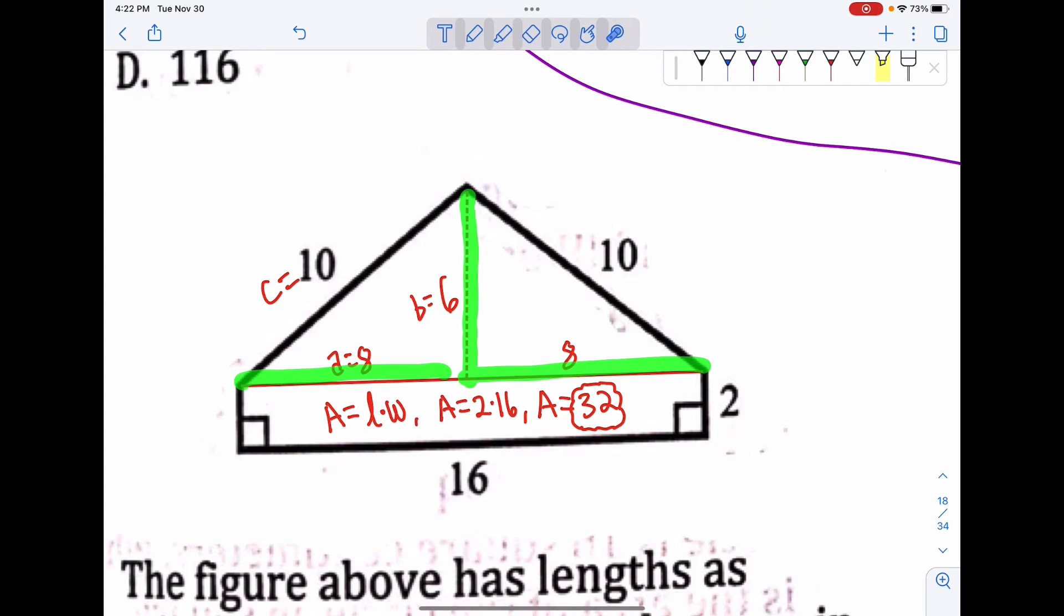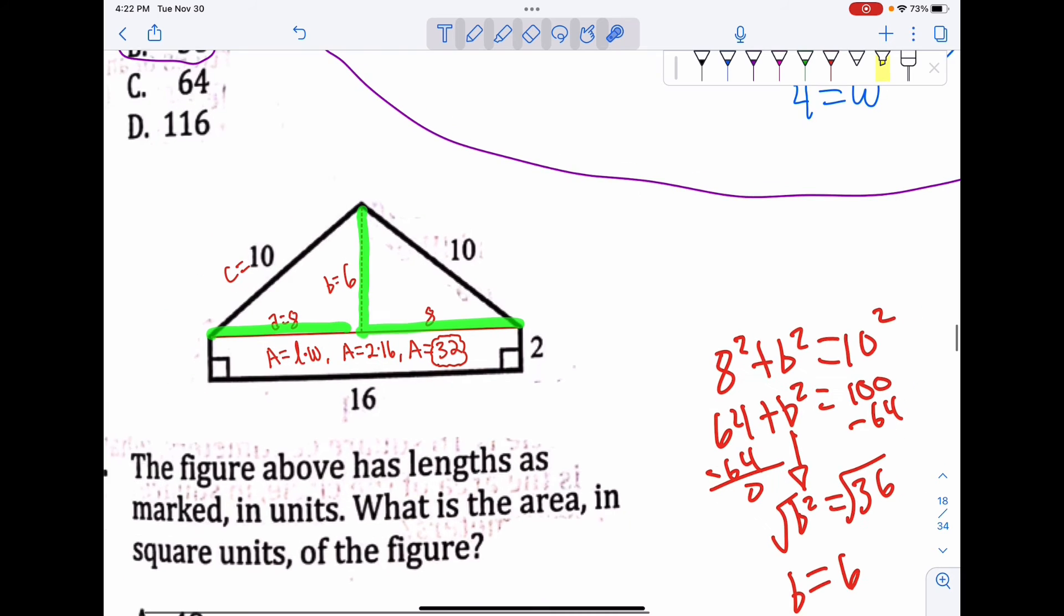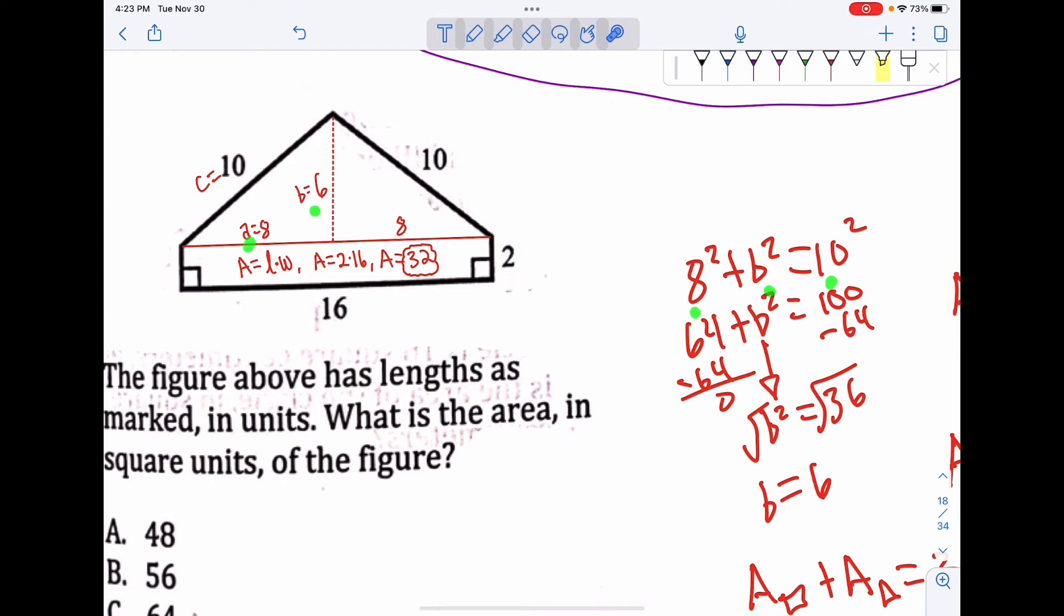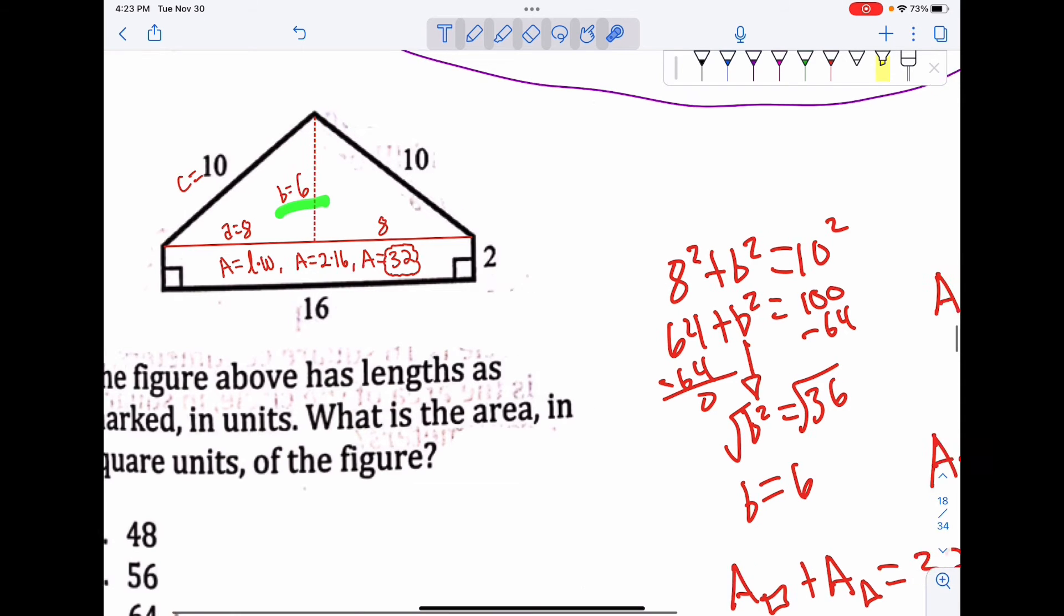Now we don't know what this height is, so we have to figure it out using the Pythagorean theorem. a² + b² = c². a times 8 is 64, 10 times 10 is 100. 100 minus 64 is 36. b² equals 36, square root both sides, b equals 6. That gives us our height.